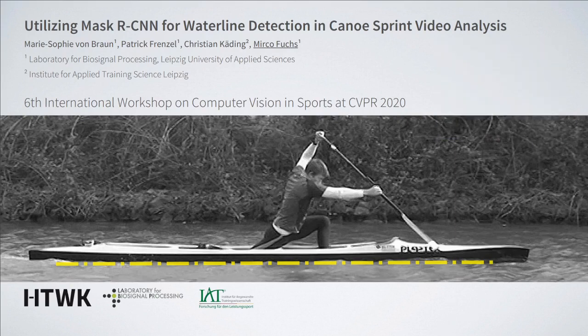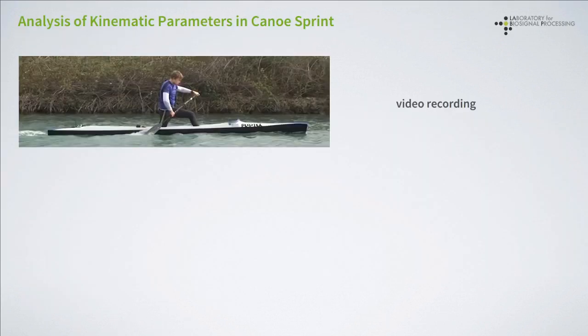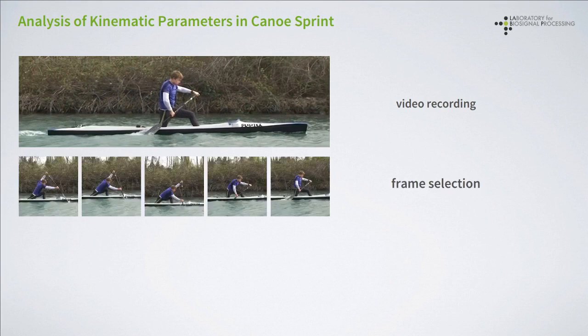Let's first start with explaining what the analysis of kinematic parameters in canoesprint is all about. The analysis is based on video sequences that are recorded from a motorboat and from approximately perpendicular direction. Given this video sequence, frames are then manually selected with respect to the state of the paddle — for instance when the paddle enters the water, which can be seen on the left, or when it leaves the water as can be seen on the right.